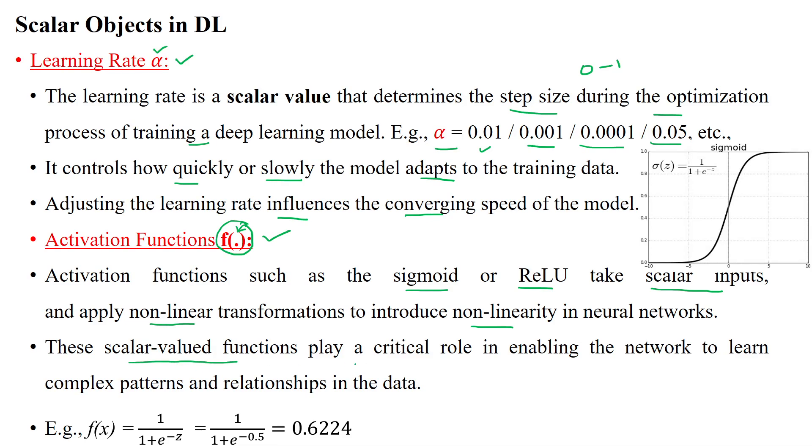That's why they're called scalar-valued functions, which play a critical role in enabling neurons in the network to learn complex patterns and relationships in the given dataset. For example, using the sigmoid function 1/(1 + e^(-z)) gives the scalar value 0.6224. All activation functions produce only scalar values with no direction.